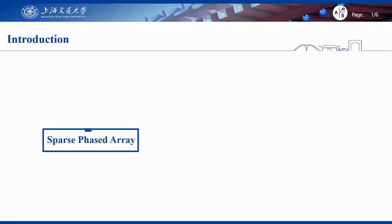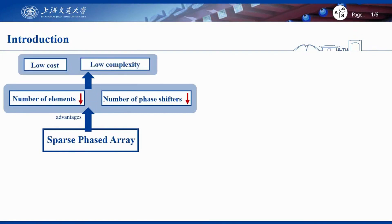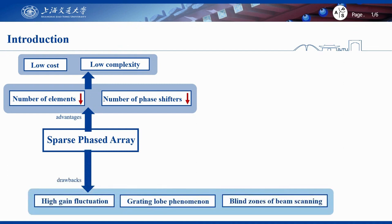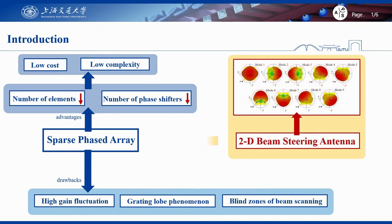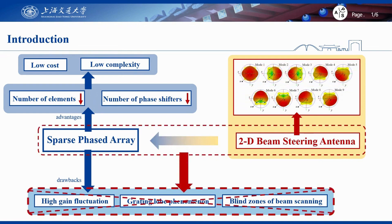In sparse phased arrays, the number of elements and phase shifters can be reduced for low-cost and low-complexity design compared with half-wavelength phased arrays. However, drawbacks such as high gain fluctuation during scanning and grating lobe phenomena are severe. Thus, a two-dimensional beam steering antenna is utilized as an element in this paper to improve the performance of sparse phased arrays.